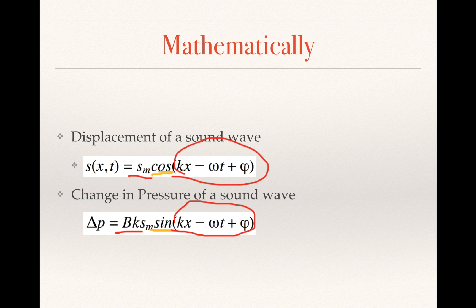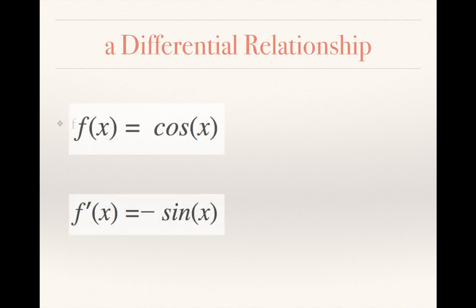So moving right along, we can see what is the relationship between these two, and that is a relationship of a derivative. We know that the derivative of cos(x), our f(x), is negative sin(x), our f'(x). So we have displacement represented as a cosine function and change in pressure represented as a sine function. We can see the two are related.